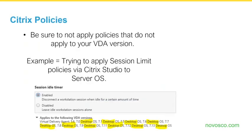Don't apply policies that don't apply to your VDA version. For example, applying a session limit policy to server operating systems when it doesn't work there is a common mistake. Citrix Studio will actually tell you that a policy only applies to certain desktop OS VDAs. So when creating and applying policies, make sure they apply to both your server or desktop OS and to the version of VDA you're using.